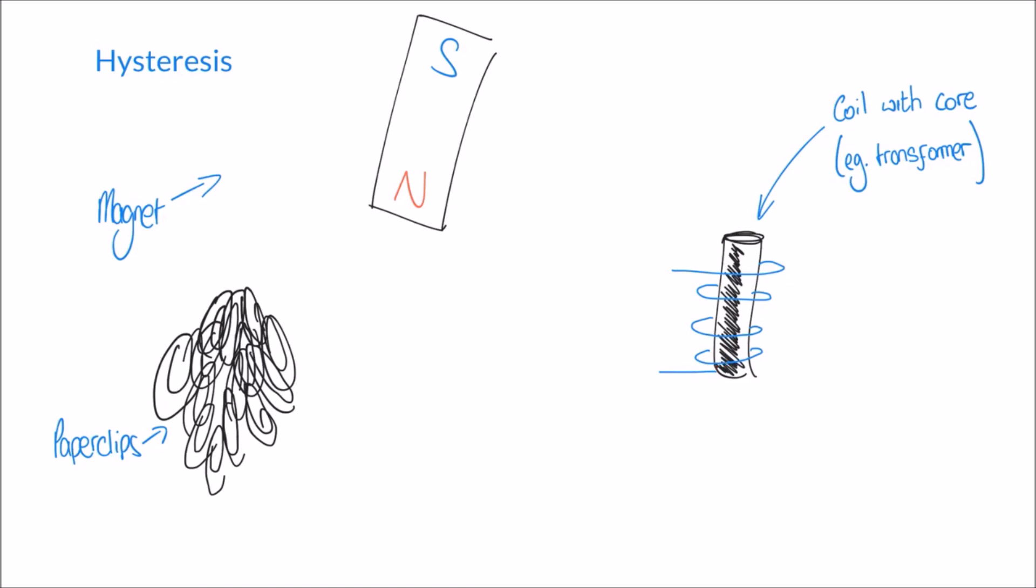Now hysteresis presents a little bit of a problem, because we might stop the current in this coil, but the iron core remains magnetized. Or even worse, my coil might be connected to an AC power supply, and because it's AC, an alternating current, the direction of that current is continually changing. And as a result, the magnetic field produced by my coil is also going to be changing.